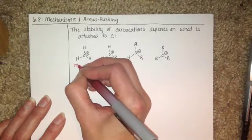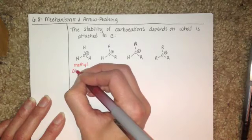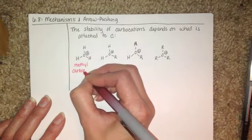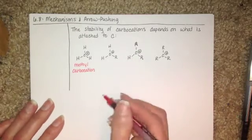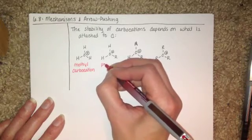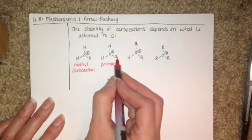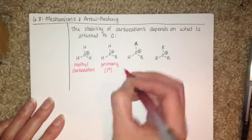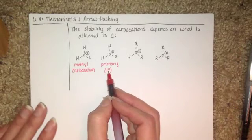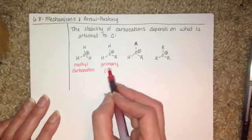The first one is called a methyl carbocation, because it's a one-carbon unit. The second one is called a primary carbocation, because it has one alkyl group attached. We will abbreviate that with a one in a degree sign, but it's not pronounced first degree carbocation. It's pronounced primary carbocation.